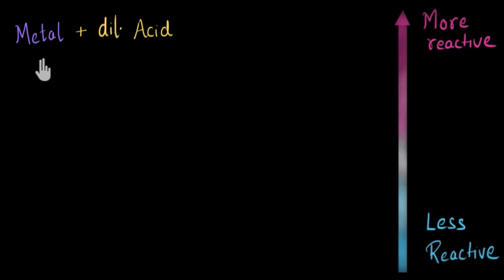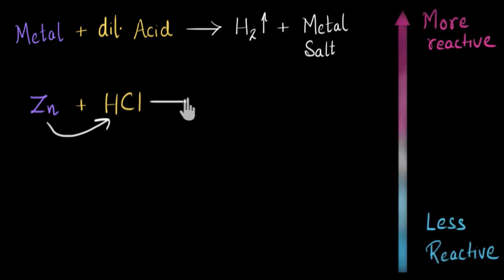In general, when metals react with dilute acid, we get hydrogen gas and with this, metal salt is being formed. For example, if I take zinc metal and react it with dilute HCl, zinc will displace the hydrogen. So we will get hydrogen gas and it will form zinc chloride, ZnCl₂.